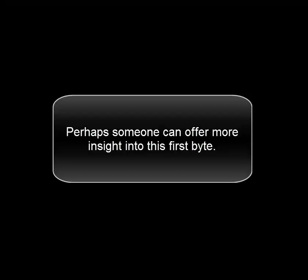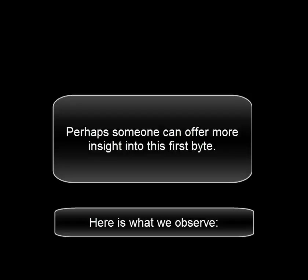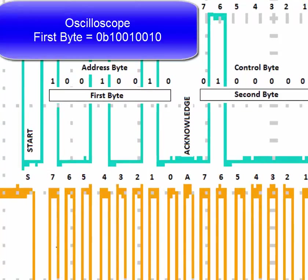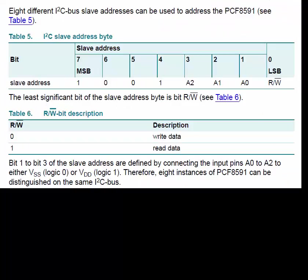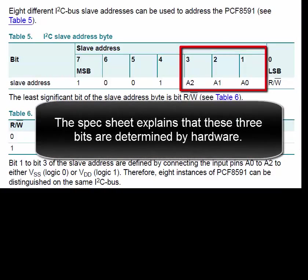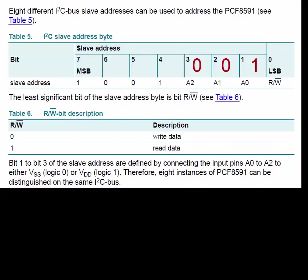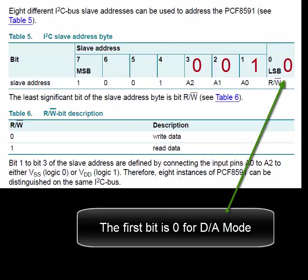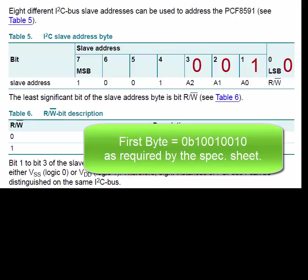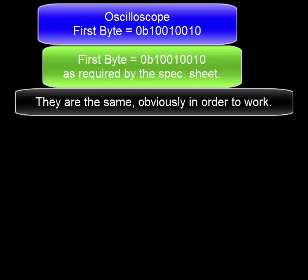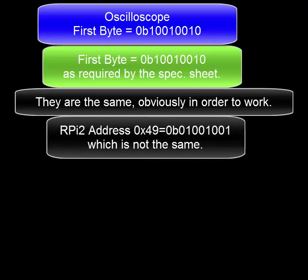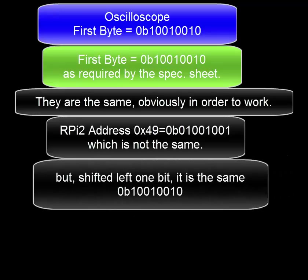Perhaps someone can offer some insight into the first byte. The oscilloscope shows the first byte, and the spec sheet explains that these three bits are determined by hardware. The first bit is 0 for D-to-A mode. The Raspberry Pi address is 0x49, which shifted left one bit matches the first byte.